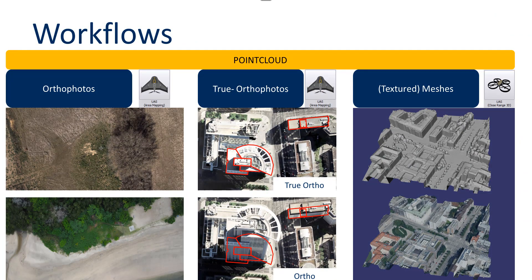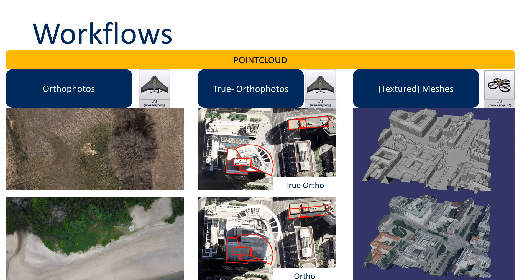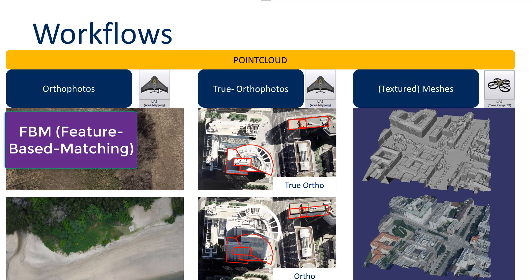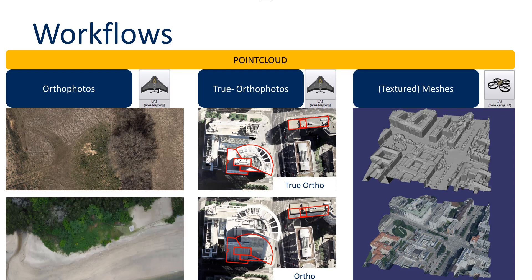One workflow will be the classic orthophoto, which can be processed in the area mapping processing file type. Here we will process the point cloud with the feature-based matching least square matching algorithm. It is a very fast algorithm, and the process includes good radiometric corrections and offers great results for open terrain areas where the major focus is not on buildings or rooftops but more on rural areas.